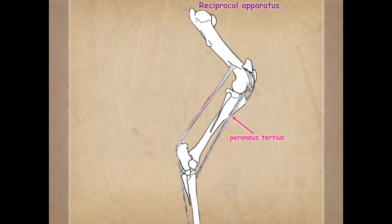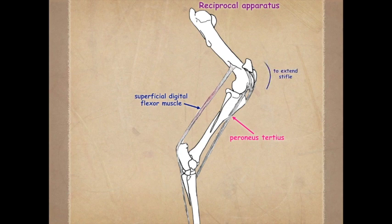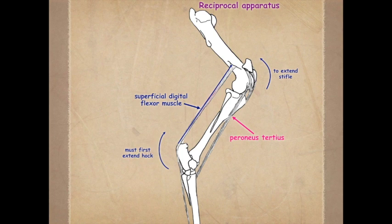The superficial digital flexor muscle has a very fibrous component in it, going from the supracondylar fossa, and it has an attachment to the calcaneus. Therefore, in order to extend the stifle, we also need to first extend the hock. Any of you that have picked up the hind limb of a horse — recall how when you pick it up, you first flex both of these joints, and then extend both of them caudally. This is why. This is referred to as the reciprocal apparatus, which creates a parallelogram: in order to flex, we must flex; in order to extend, we must extend.